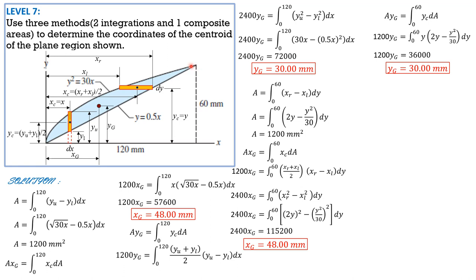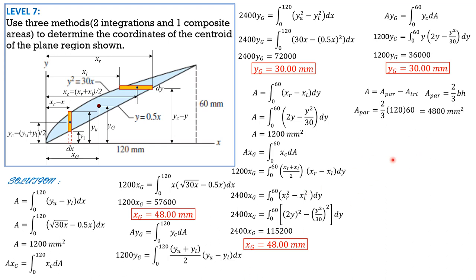Then one composite area. The shaded area is the area of the parabola (two-thirds base times height) minus the area of the triangle (one-half base times height). Area of parabola is 2/3 times 120 times 60 equals 4,800 mm². Area of triangle is 1/2 times 120 times 60 equals 3,600 mm². So the shaded area is 4,800 minus 3,600 equals 1,200 mm².